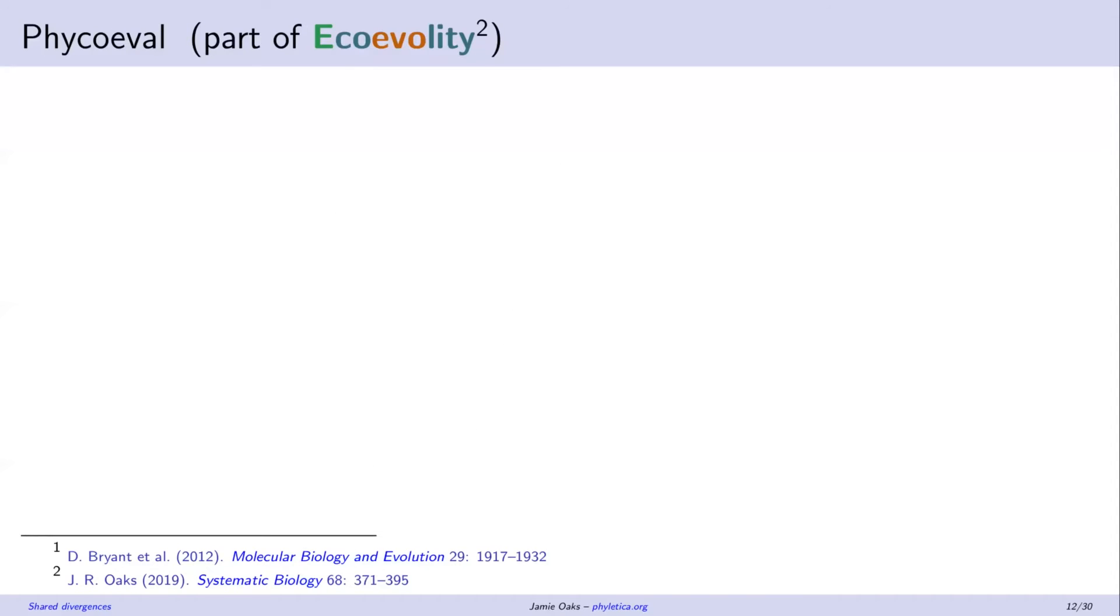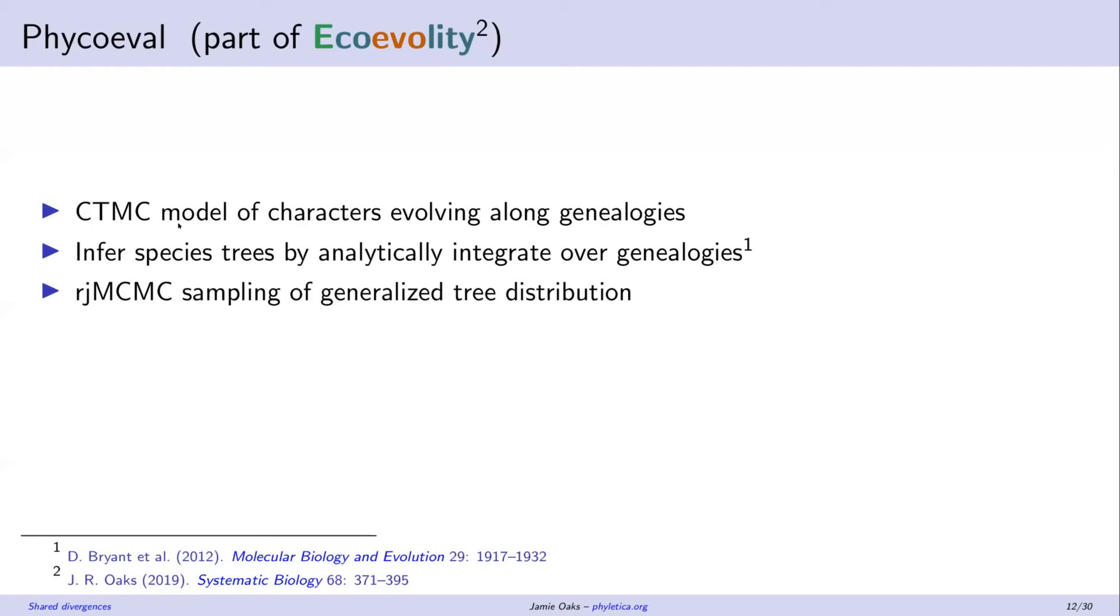Okay, so this is all implemented in a new tool called Phi coeval. This is part of the ecoevolity package. So just very briefly, we're going to assume a continuous time Markov chain model of characters evolving along genealogies. And then we're going to take advantage of some really nice work from David Bryant and colleagues, where we can analytically integrate over coalescent genealogies and directly estimate the species tree from the character data. I do want to point out that I'm coming at this from a biogeographic perspective, and so that likelihood model makes sense.